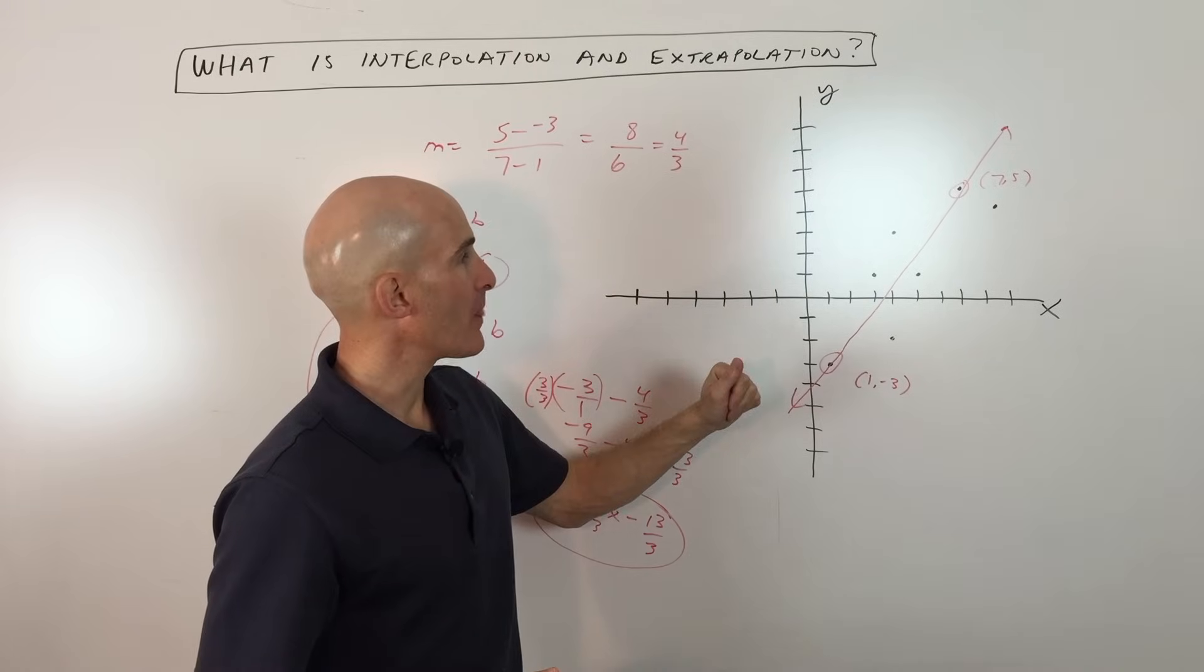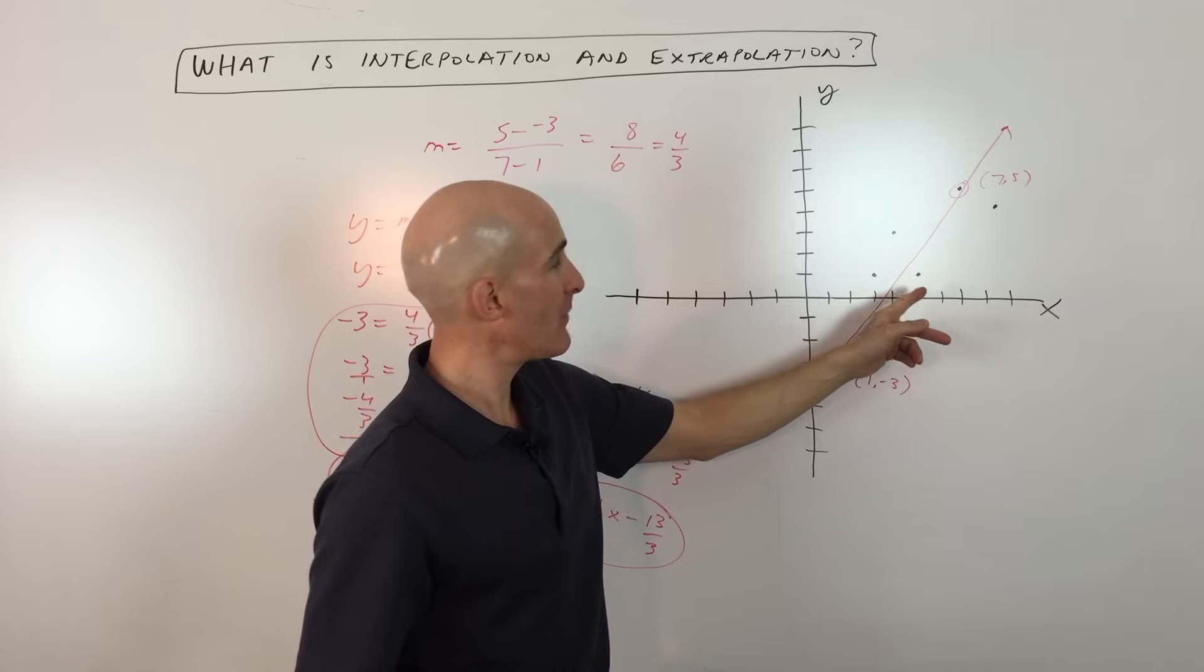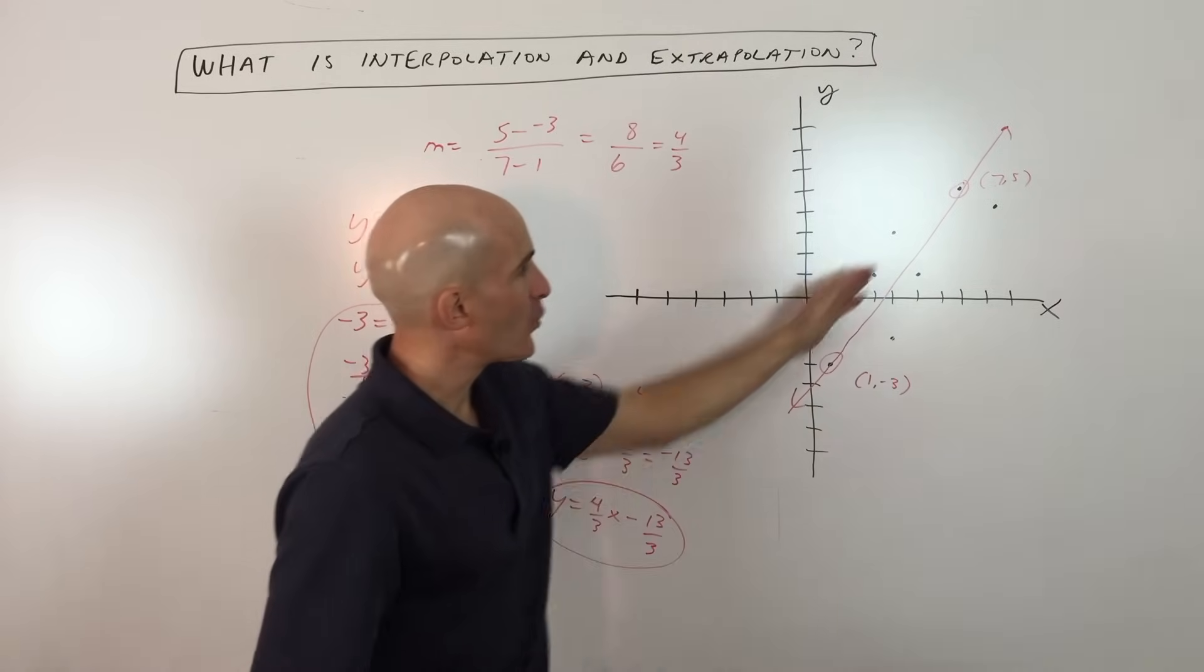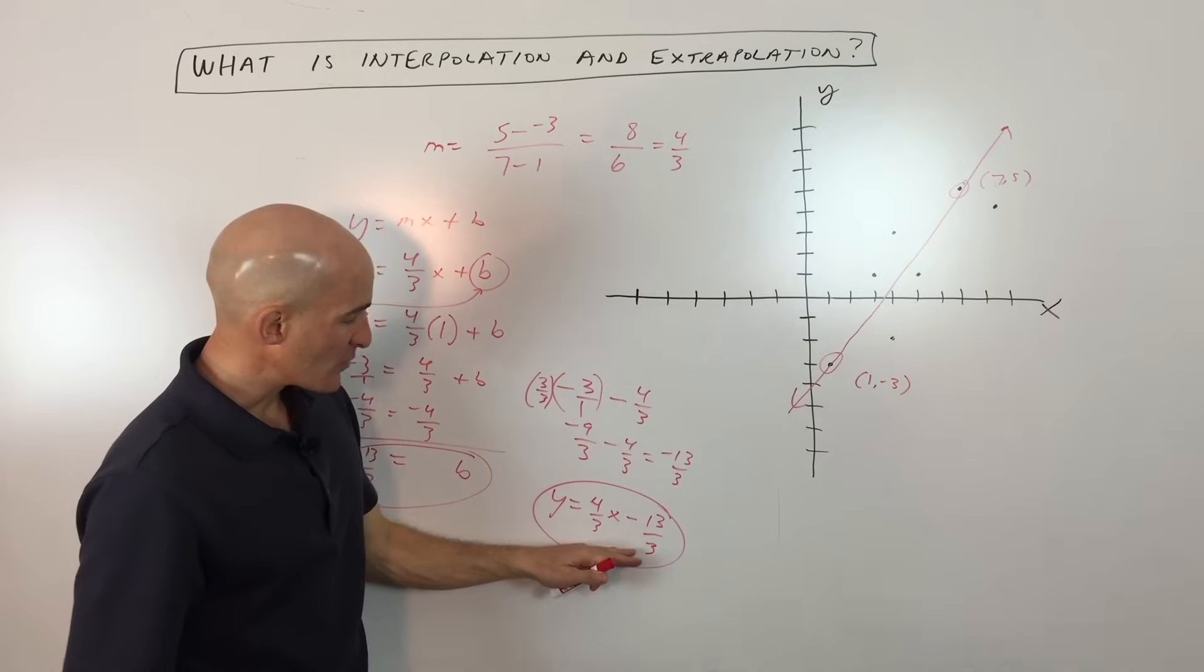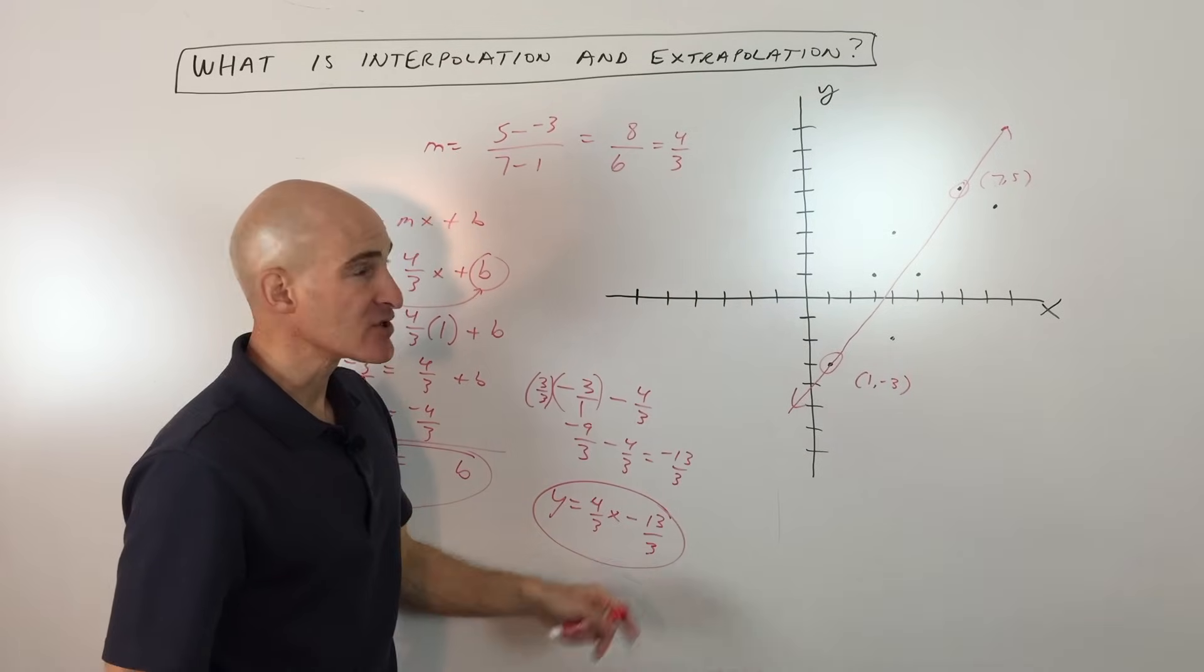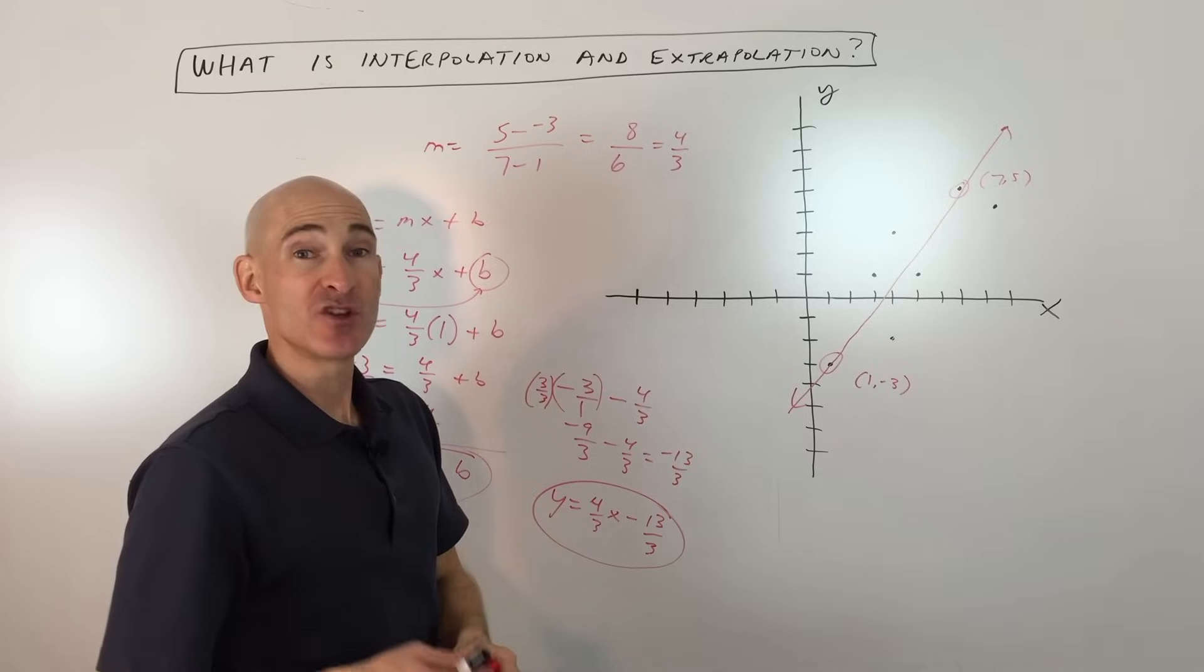But continuing on here we're talking about what's the difference between interpolation and extrapolation. Well, once you find that equation of the line of best fit, which is this one right here, y equals 4 thirds x minus 13 thirds, you might want to use that equation to make a prediction.